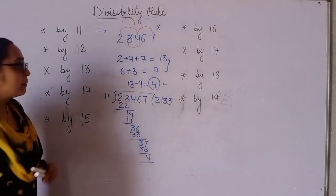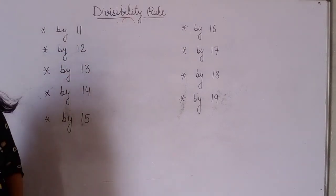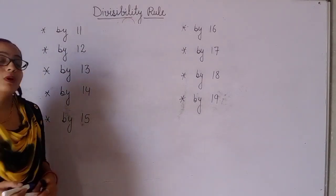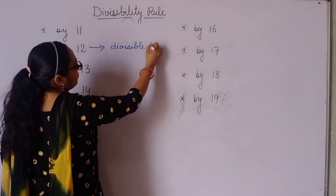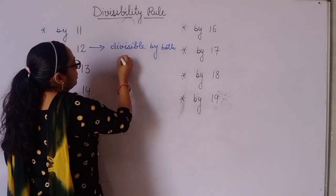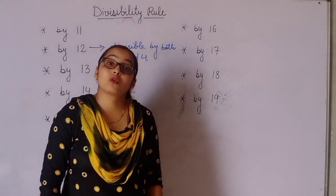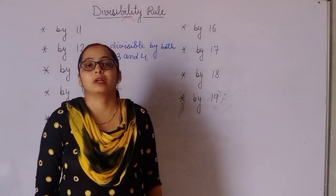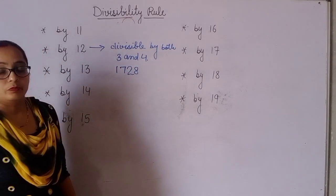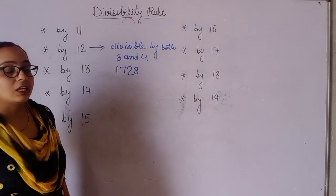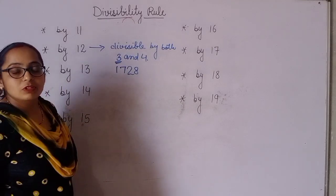Now, which number will be divisible by 12? A number is divisible by 12 if it is divisible by both 3 and 4. You need to check both divisibility rules. Suppose I have the number 1728. You have to check whether it is divisible by 12. First, check whether this number is divisible by 3.